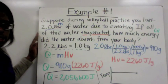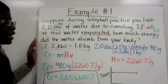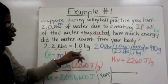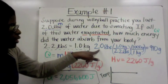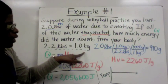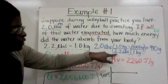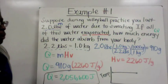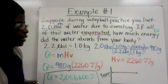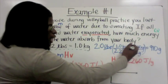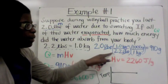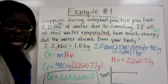First, convert pounds to grams, since everything is set up in grams. Using 2.2 pounds = 1 kilogram: 2 pounds times (1 kg / 2.2 lbs) times (1,000 g / 1 kg). Pounds cancel, then kilograms cancel, leaving grams. So 2 × 1 × 1,000 ÷ 2.2 = 910 grams.